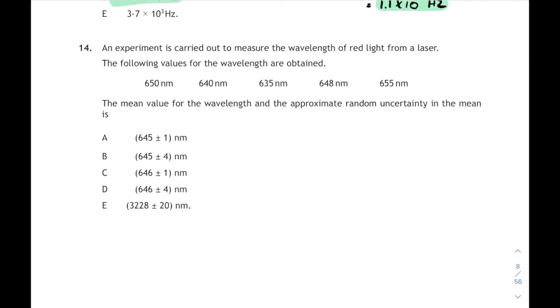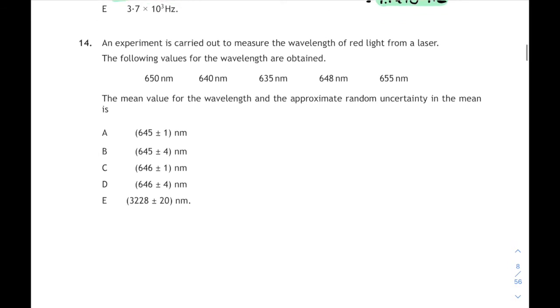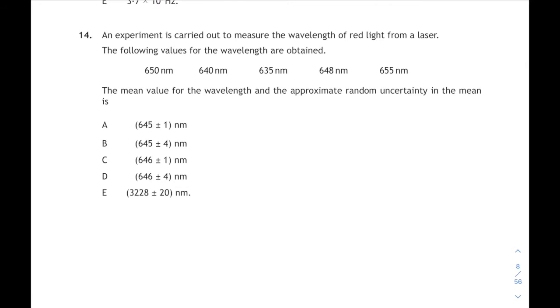Question 14, there's always a question on uncertainty somewhere in your paper. We have to find the mean of all these values of wavelengths of red laser light. The mean is you simply add them all together, the sum of them all divided by how many of them there are. There's 5 in this case. And if you do the total divided by 5, you'll get an answer of 645.6. Now, what's your rounding here? Because we've got options for both 645 and 646. So it rounds up to 646.